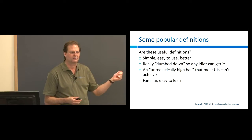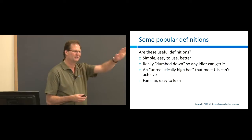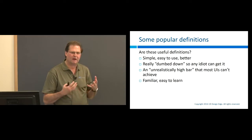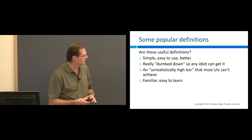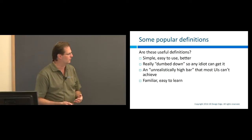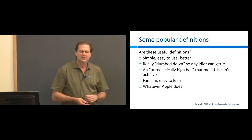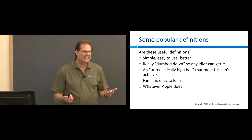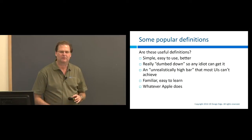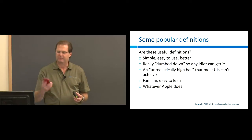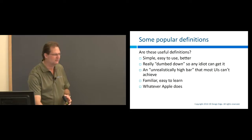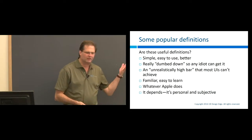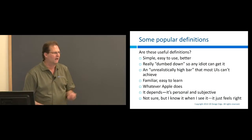If you're familiar with Don Norman's 'The Design of Everyday Things,' that book explains how everyday familiar things are not intuitive. 'Easy to learn' — the whole point is to avoid the need for learning, so that's not a good definition. Some people say it's whatever Apple does, but Apple gets a lot of things wrong. I keep track of all the bad, unintuitive UI on my iPhone and it's a huge list. Some say it's personal, subjective, or 'I know it when I see it.' These are all wrong — not useful definitions.